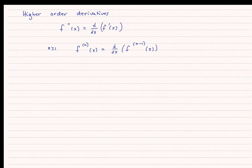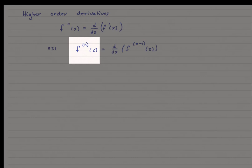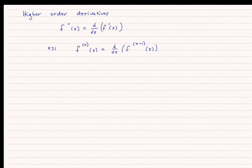One final thing: I can take derivatives higher than just the first derivative — for instance, the second derivative. The second derivative of f(x) is simply the derivative with respect to x of the first derivative of f(x). I can expand this to any value of n. For the nth derivative, I put n in parentheses — so f to the (n) is not f to the nth power; it's the nth derivative of f. It equals the derivative of the (n minus 1)th derivative of x. And that's our first round of rules of differentiation.